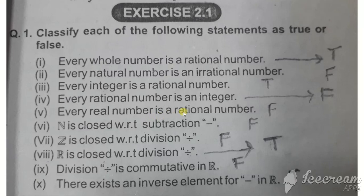Statement five: Every real number is a rational number. No, real numbers include both rational and irrational numbers. So this is false.